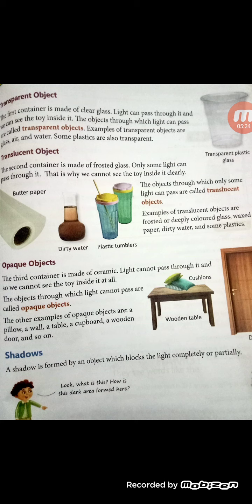Now let's study about shadow. A shadow is formed when an opaque object comes in between the light source and a surface. A shadow is formed by an object which blocks the light completely or partially. If I come in between the source of light, my shadow will be formed. As you can see in this diagram, light is blocked by the palm tree, so the shadow of the palm tree is formed there.